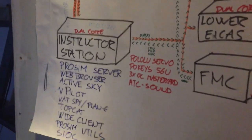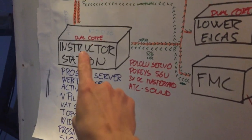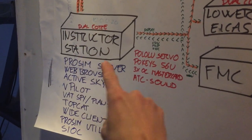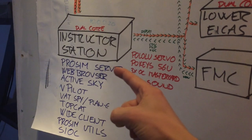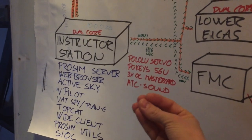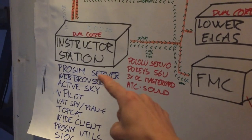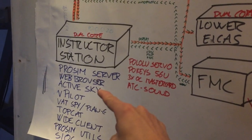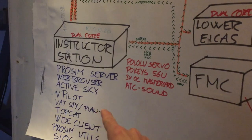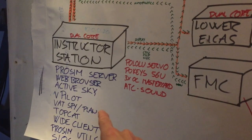Then I have the Instructor Station — it's an old dual-core computer. It runs ProSim Server, the ProSim program that ties everything together, a web browser, Active Sky for weather, vPilot, and vATSIM.